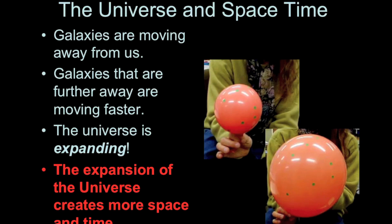Because remember, we want to have galaxies that don't get larger over time. And so if you glue a piece of paper or a piece of felt onto the surface of the balloon, when you blow it up, those quote-unquote galaxies don't get larger.